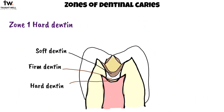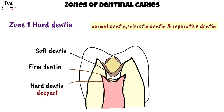Histologically, dentinal caries has three zones, most clearly distinguished in slowly advancing caries. The first zone is the zone of hard dentin — the deepest zone, provided the pulp is not infected. It includes normal dentin, sclerotic dentin, and reparative dentin. Clinically, this dentin is hard and cannot be removed by an explorer; a burr or sharp cutting instrument is needed.